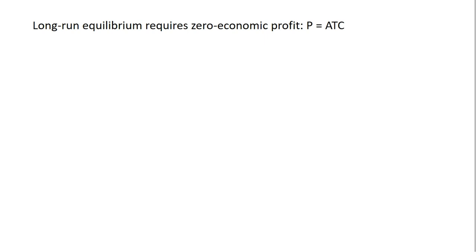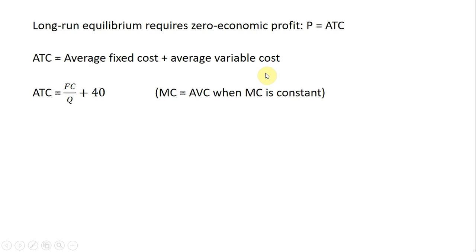Long-run equilibrium, and we stated in this problem that the firm is in long-run equilibrium, and in monopolistic competition, that means price equals average total cost, ensuring that the firm is just making a normal rate of return or zero economic profit. Here's an expression for average total cost. Average total cost is average fixed cost plus average variable cost, where average fixed cost is just a firm's fixed cost, FC divided by Q. And average variable cost will equal marginal cost when marginal cost is constant. So I'm just substituting 40 in for average variable cost. Again, we are told that the firm has constant marginal cost of $40.